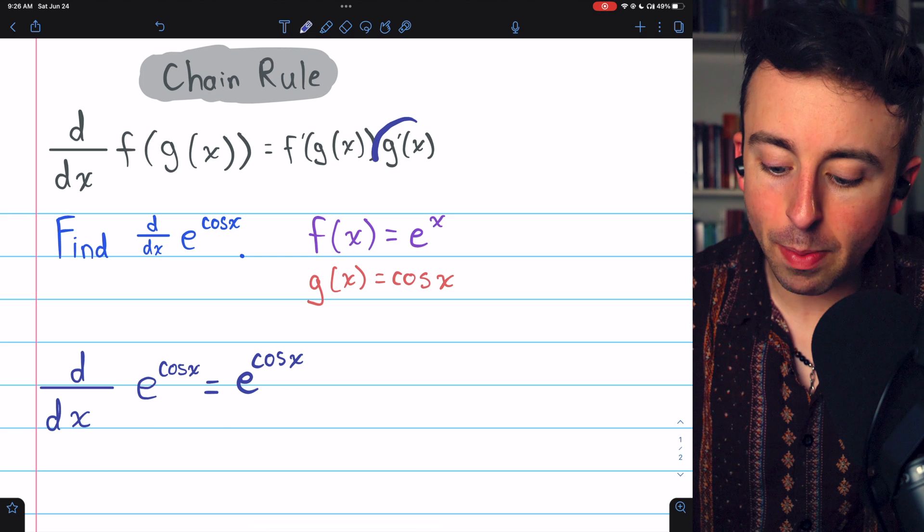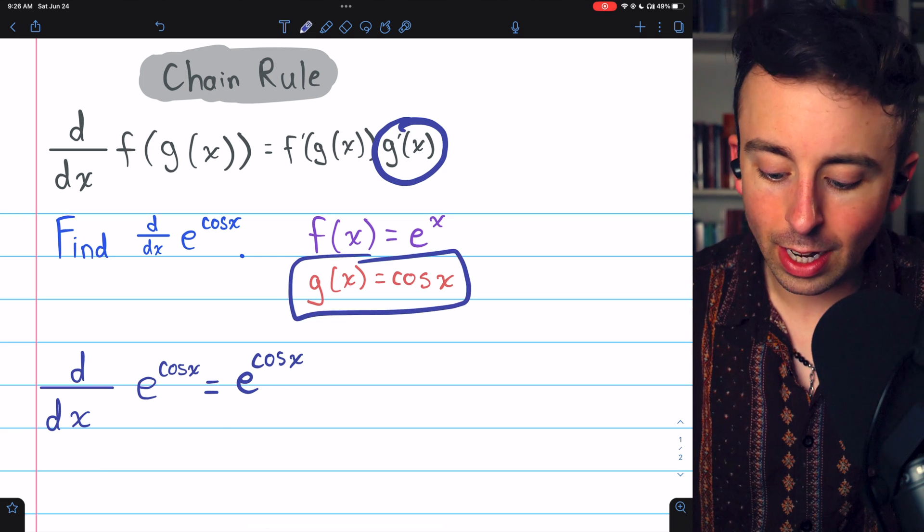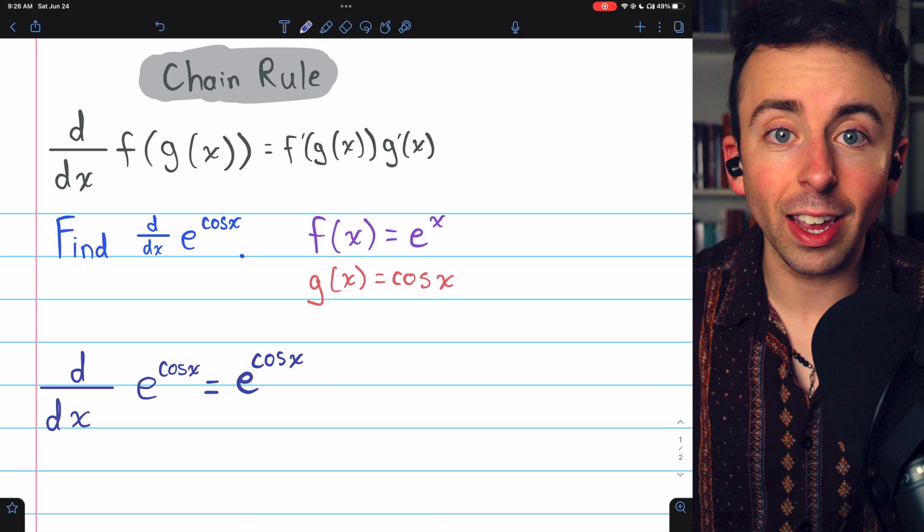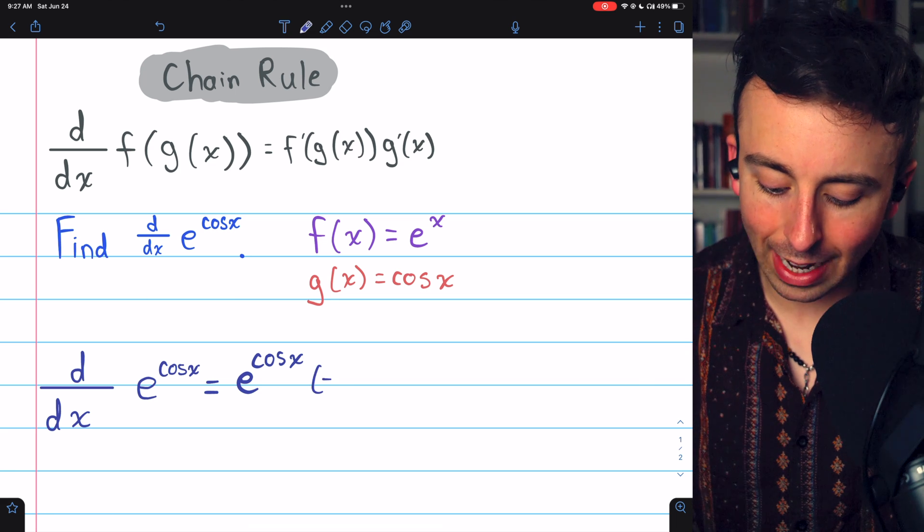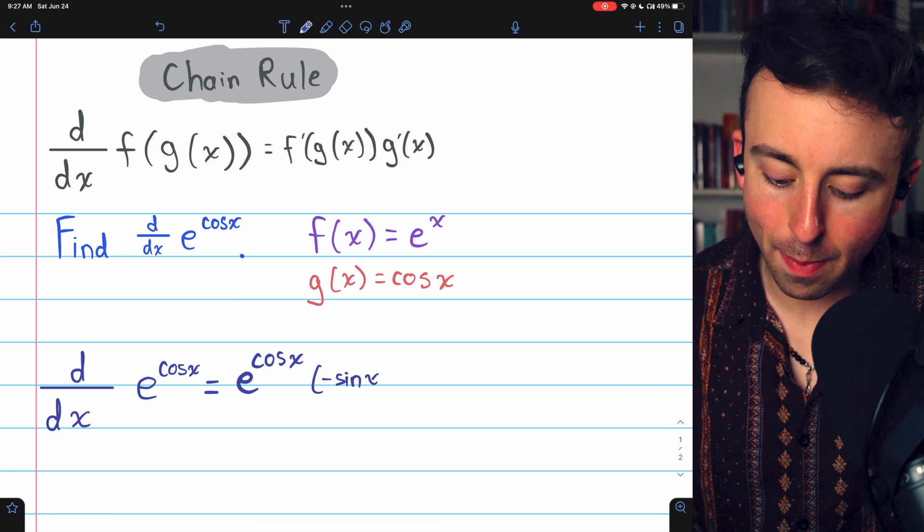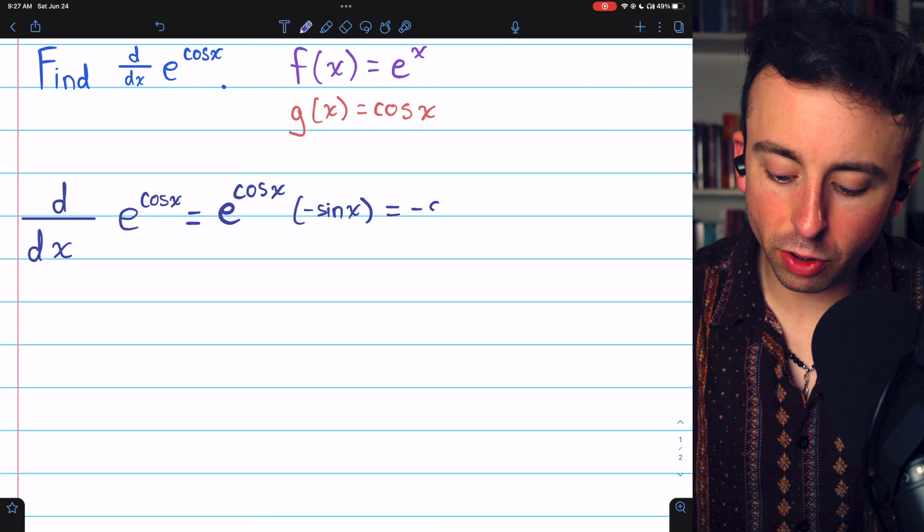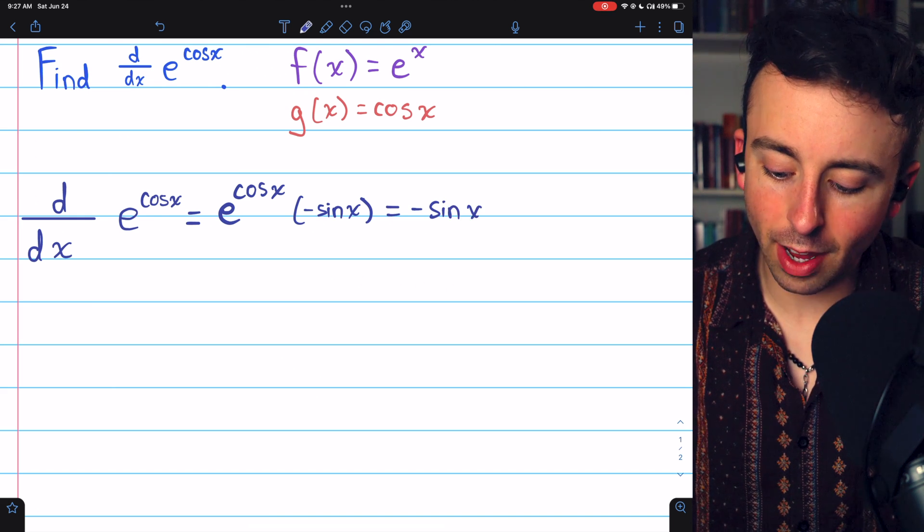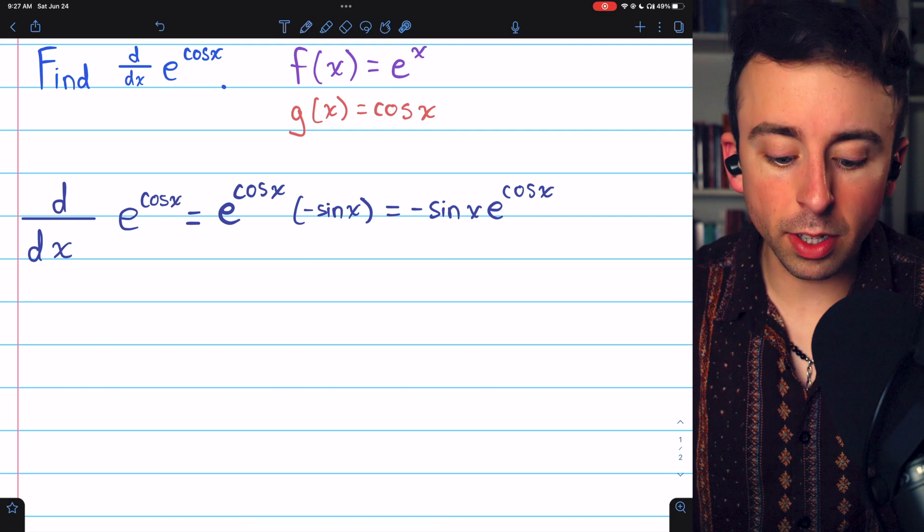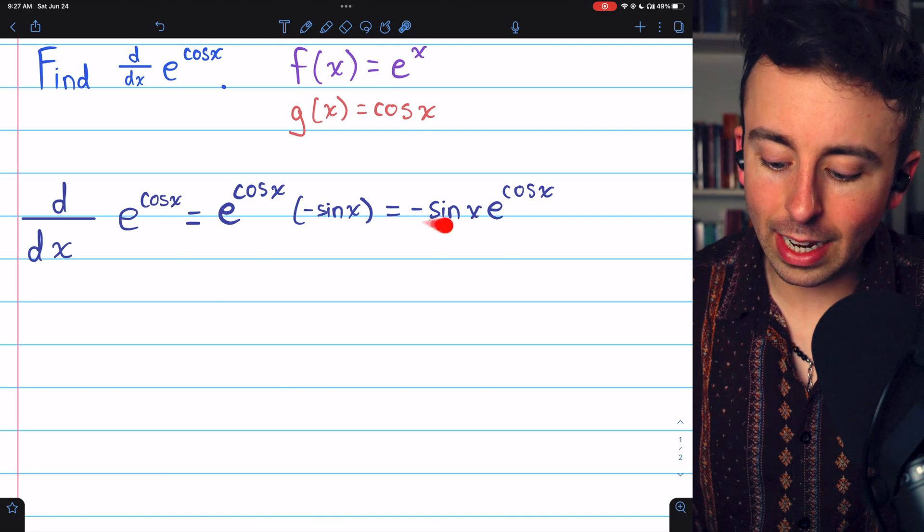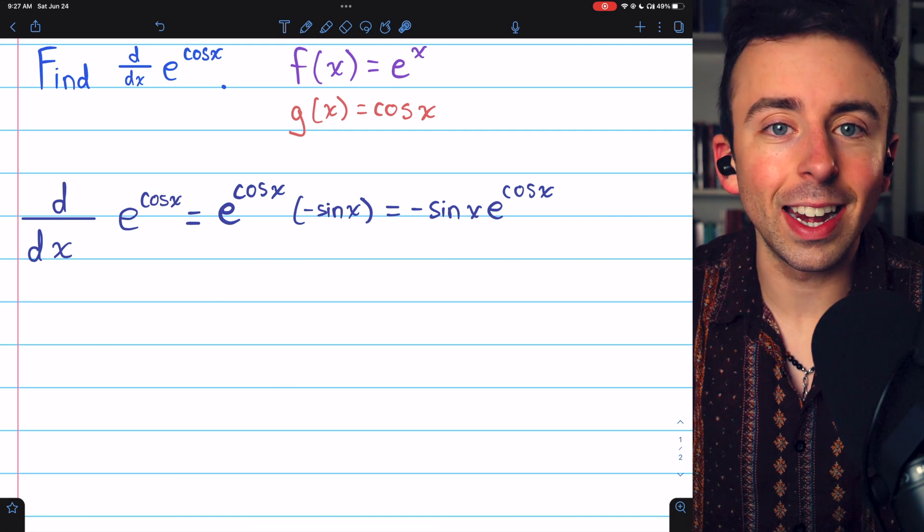Then we multiply by g prime, the derivative of the inside function. The inside function is cosine x, and its derivative is negative sine x, so we multiply by that. And that's the derivative, which you might prefer to write as negative sine x e to the cosine x. So the derivative of e to the cosine x is negative sine x e to the cosine x.